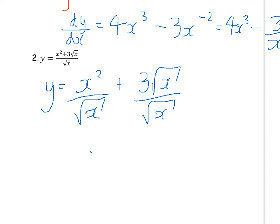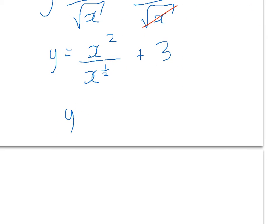On the first part, there's a square root of x on top and bottom so they cancel. On the second part, we have x squared divided by the square root of x. Remember the square root of x is x to the power of a half, plus three. So x squared divided by x to the power of a half gives x to the power of three over two. Therefore y equals x to the power of three over two plus three.